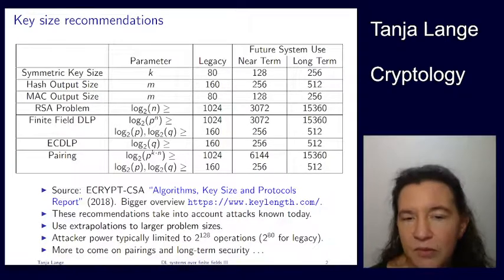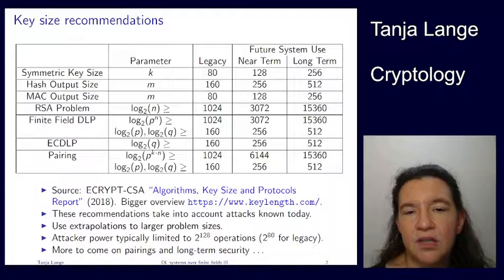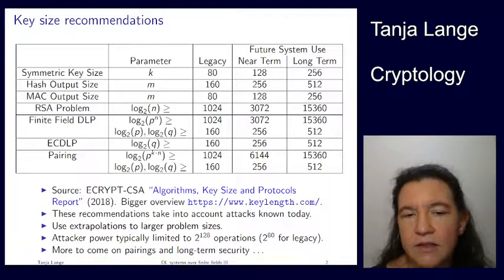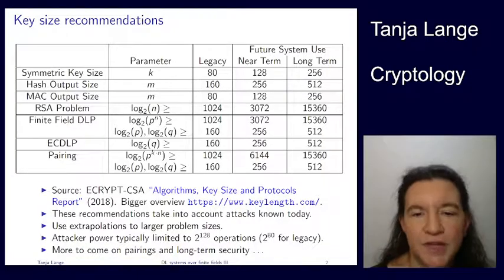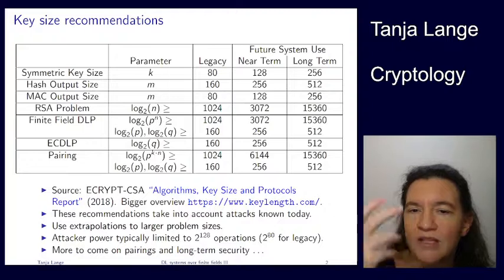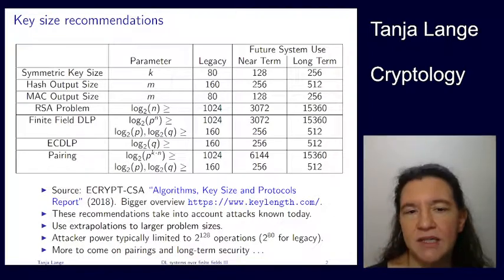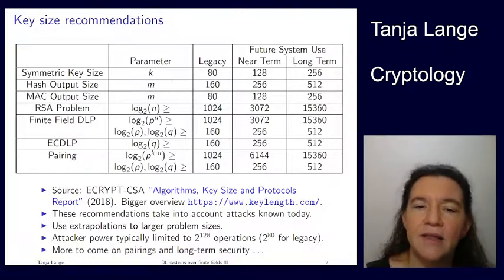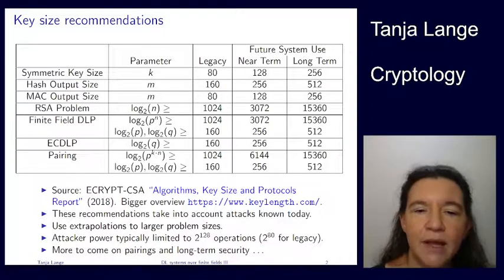For elliptic curves, we don't know any such sub-exponential attacks. So it's just a matter of what the group size is, and the group size has to have twice as many bits as the security level. That's easy.